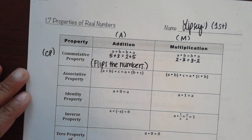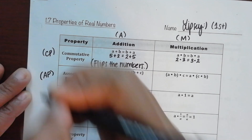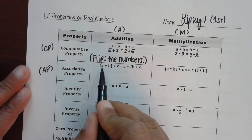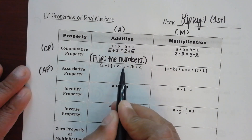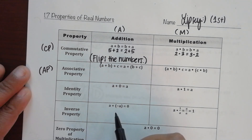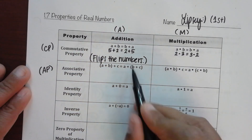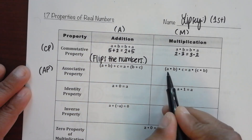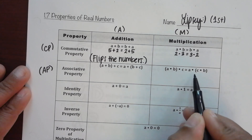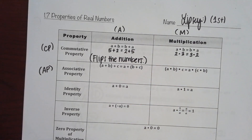The associative property, or AP for short, is read as: (a plus b) plus c equals a plus (b plus c) for addition. Multiplication is read as: (a times b) times c equals a times (b times c). What happened here?